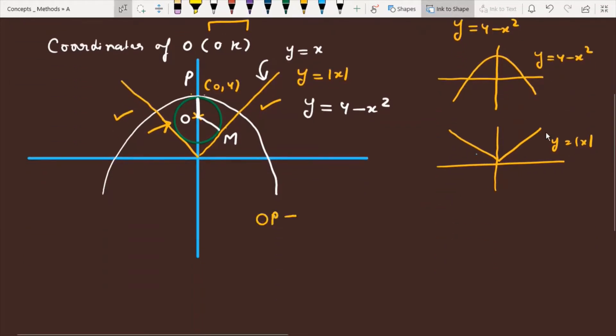With the condition, OP's length should be equal to OM. I expect this because OP is actually the radius of the circle and OM is actually the radius of the circle. The line y equals mod x is the tangent to the given circle, so OM is your radius.